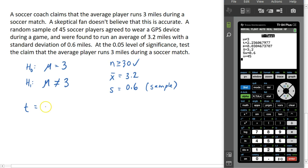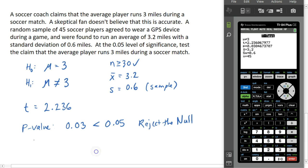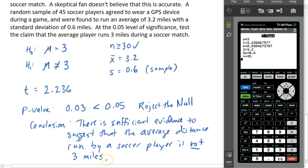We get a t statistic of 2.236 and a p-value of 0.03. Comparing that to alpha, alpha is 0.05, and 0.03 is less than 0.05, which means we are going to reject the null. The claim was that the mean was 3, our sample mean was 3.2, and we're determining if that's statistically significant. Because the p-value is less than alpha, yes — that is a significant difference. We reject the hypothesis that the average is 3. Our conclusion: there is sufficient evidence to suggest that the actual average is not exactly 3 miles.